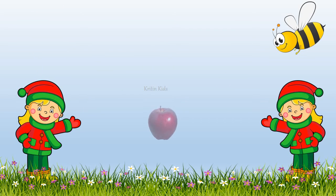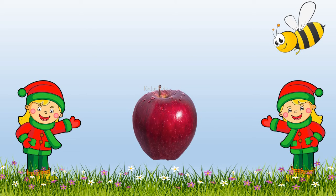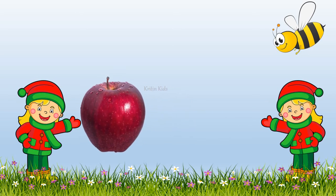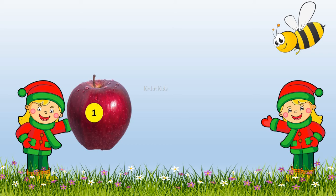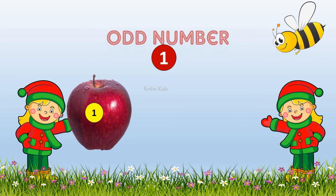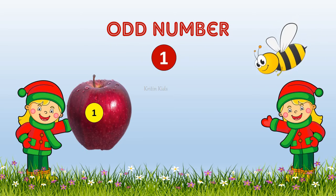Now, let's consider I have an apple. How do I divide one apple between my two friends equally without cutting it? One apple to my first friend and there is no apple left for the second friend. So, it is not divided equally between my two friends. So, number one is an odd number.